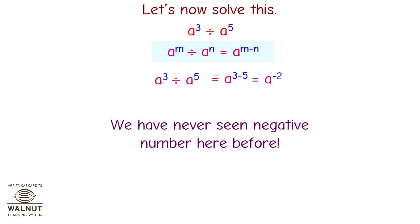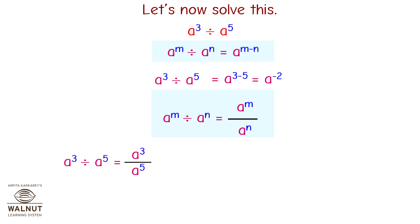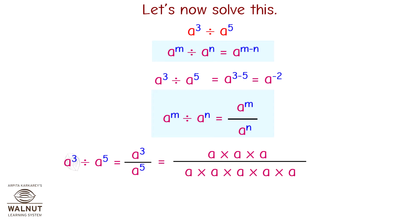What is this? We have never seen a negative exponent before. Is it possible? Let's solve this using another law of exponents: a raised to m divided by a raised to n is equal to a raised to m upon a raised to n. That is, a cube divided by a raised to 5 is equal to a cube upon a raised to 5. We write this in multiplication form and get 3 a's multiplied divided by 5 a's multiplied. We cancel out the a's from top and bottom and we get 1 upon a raised to 2.